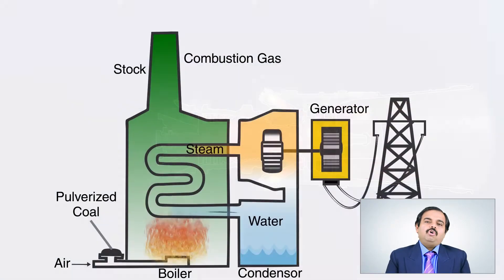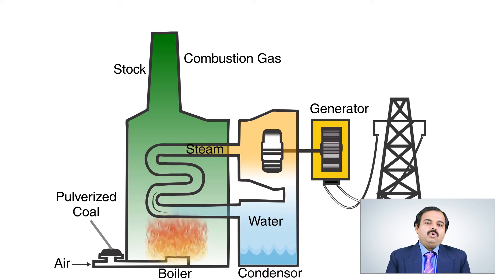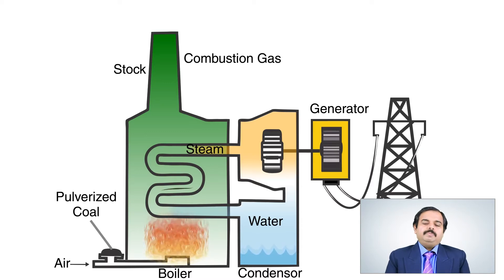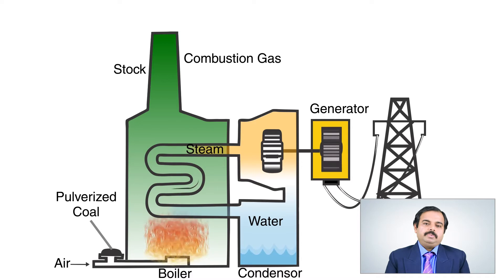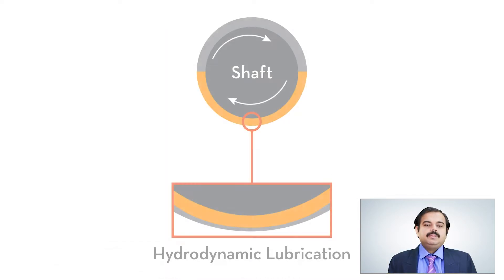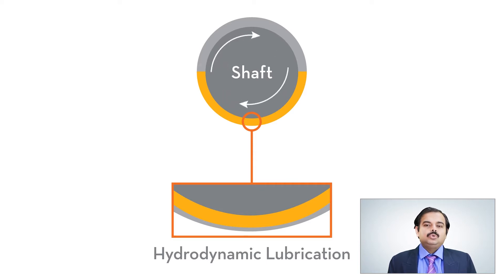In the steam turbine, oil separates the moving shaft and the stationary bearings. Before the start of the turbine, pressure is developed to keep the shaft floating. Once the shaft starts rotating, pressure is developed by hydrodynamic principles. The jacking oil pump supplies high-pressure oil to jack up the turbine-generator shaft to prevent boundary lubrication, and also supplies high-pressure oil to drive the hydraulic motor for the turning gear, also known as the barring gear.